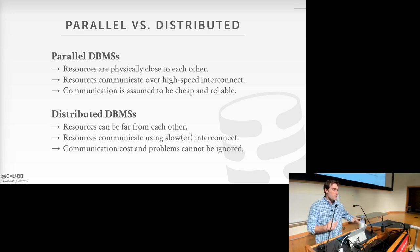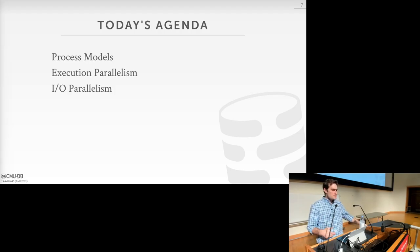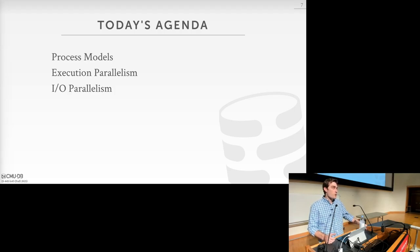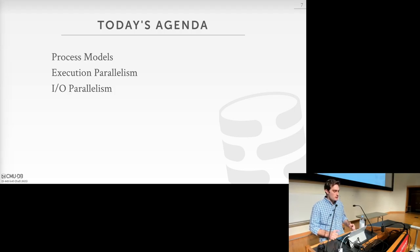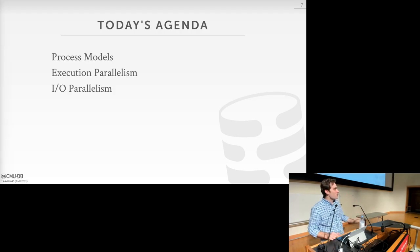Today's agenda: we're going to talk about process models — how we handle concurrent workers in our system — how we can achieve execution parallelism using a particular process model, and then at the end talk about IO parallelism. The first piece is about breaking a query's execution into multiple concurrent pieces; the IO parallelism part is about leveraging parallelism from disk.